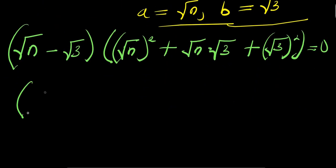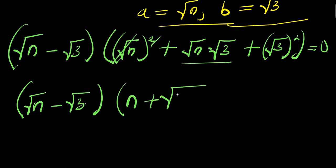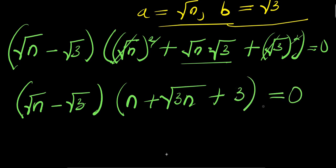So from here we have (square root of n minus square root of 3) times (n plus square root of 3·n plus 3), and this equals 0.